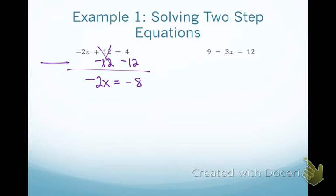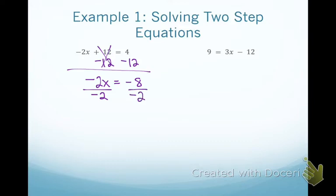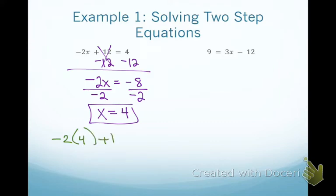That's why we call these two-step equations: step 1 is to add or subtract to move what's not connected to the other side, and step 2 is to multiply or divide to get x by itself. I divide both sides by negative 2. Using rules for division, negative 8 divided by negative 2 is positive 4. We check by plugging back into the original: negative 2 times positive 4 plus 12 equals 4. Negative 8 plus 12 is, in fact, 4 — it checks out.